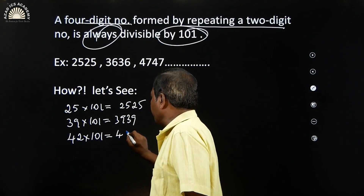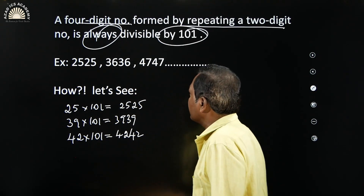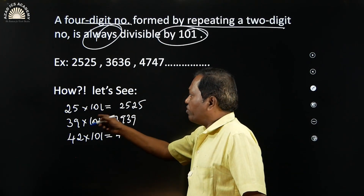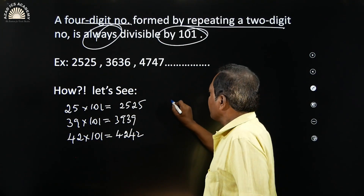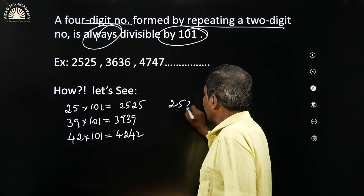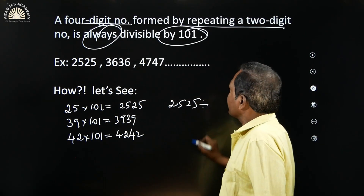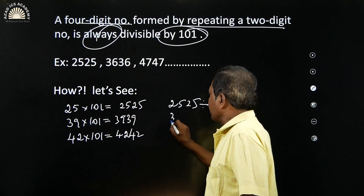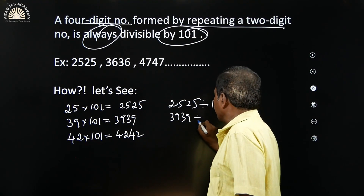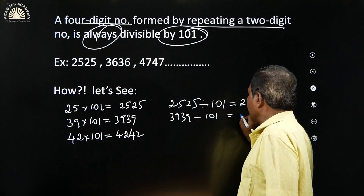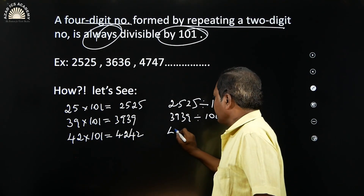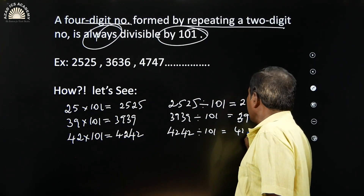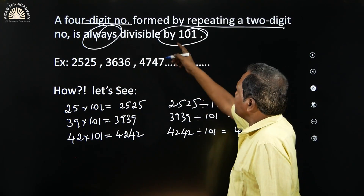For example, 42 × 101 = 4242. The concept here is defined in the reverse way: 2525 divisible by 101 gives 25; 3939 divisible by 101 gives 39; and 4242 divisible by 101 gives 42.